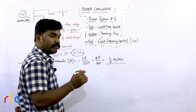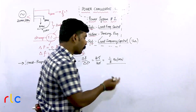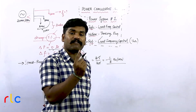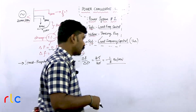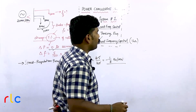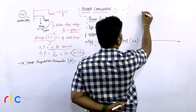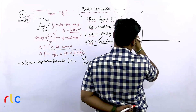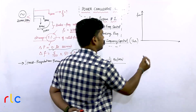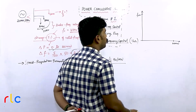The speed regulation parameter tells us how many hertz the frequency drops for every 1 megawatt addition of load on the system. If we draw the graph of power loading in megawatt versus frequency, we have the no-load frequency at one end and full load — 20 megawatt — at the other.